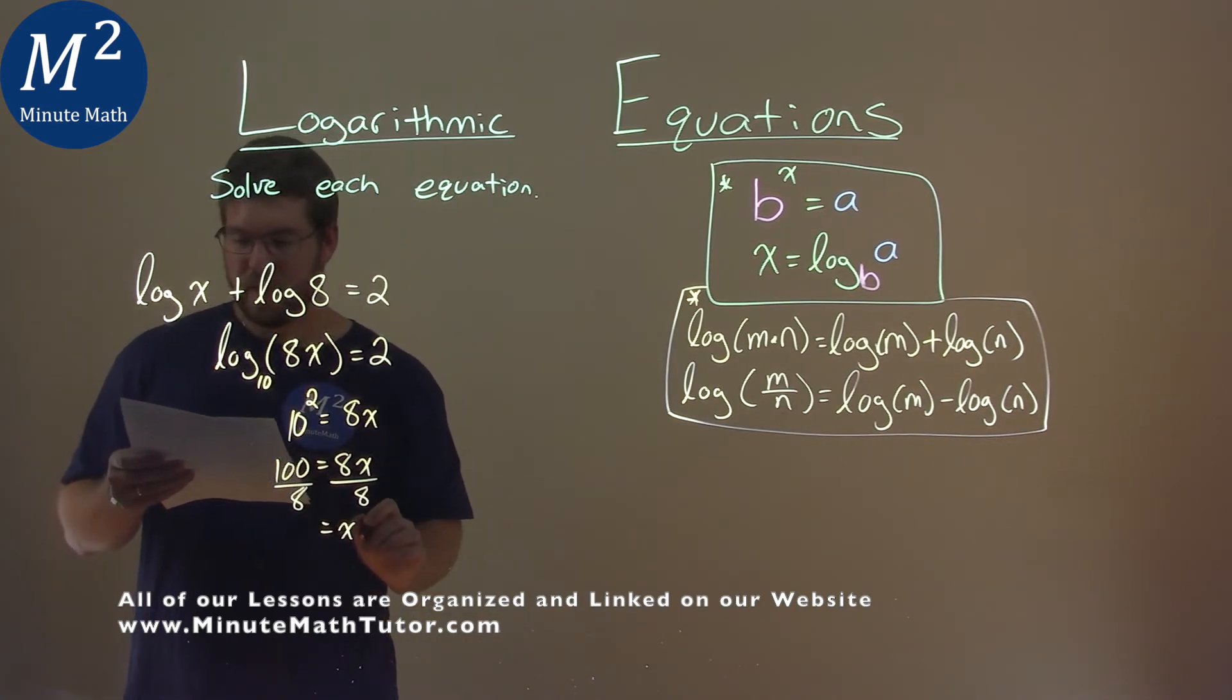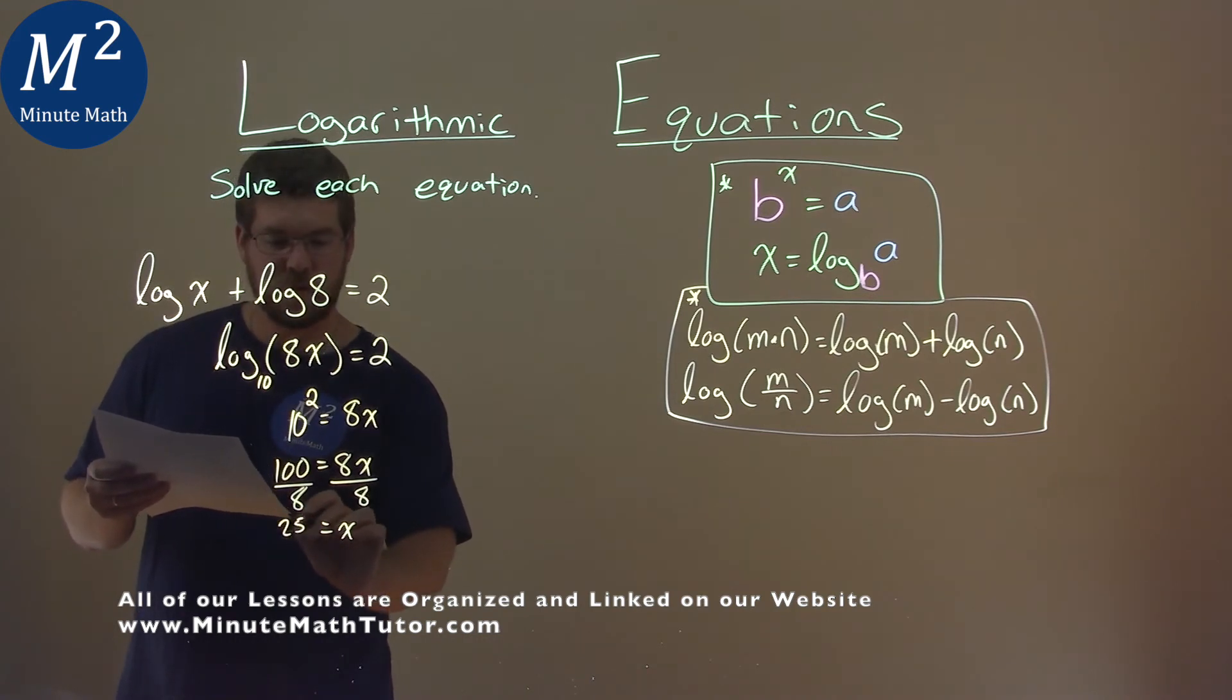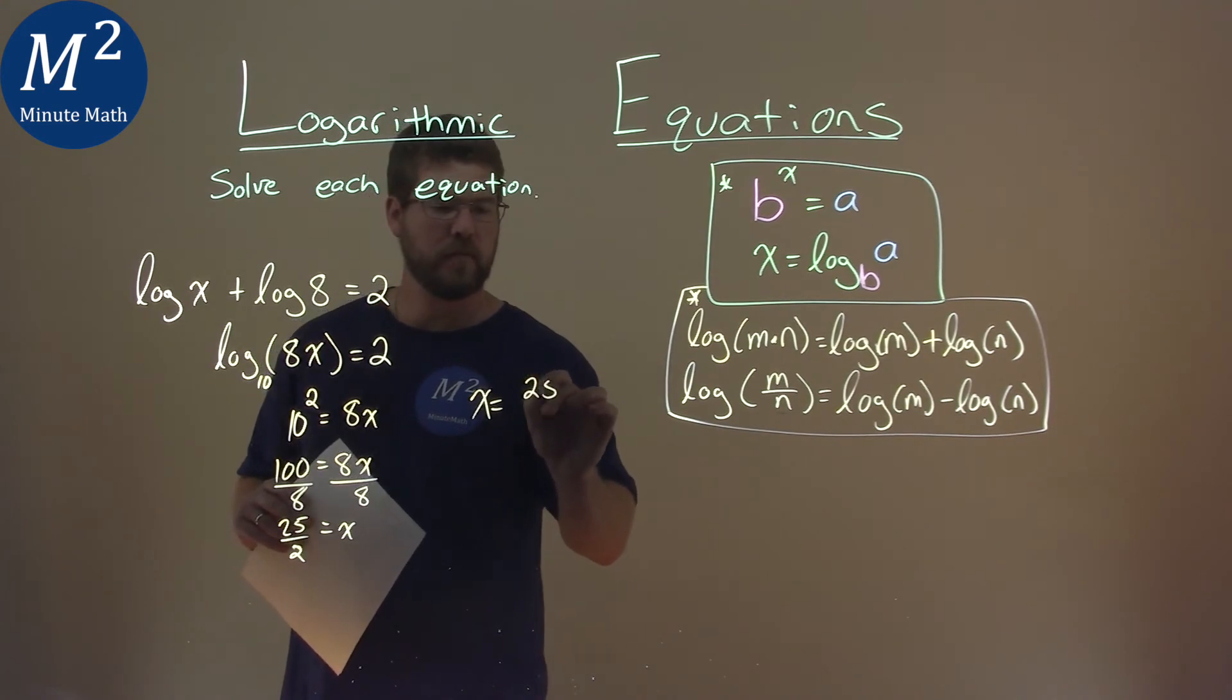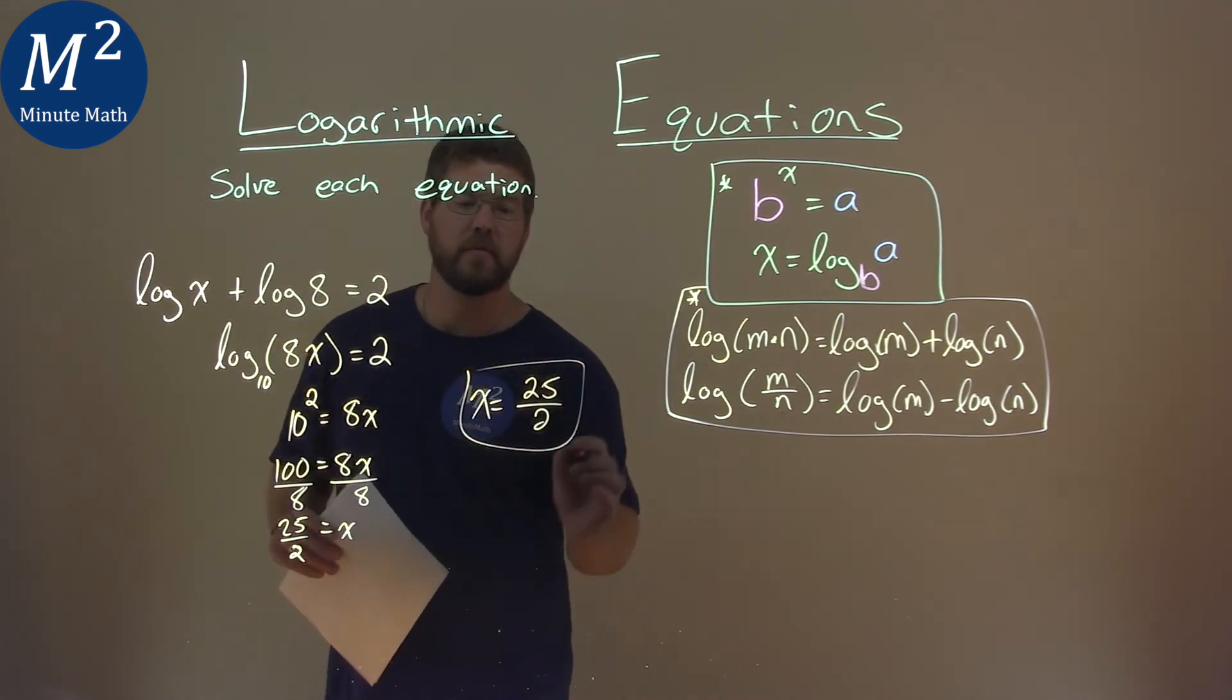100 divided by 8 simplifies to be 25 over 2. Divide both of them by 4. And so x equals 25 over 2, and that is my final answer.